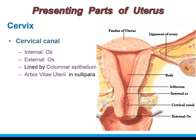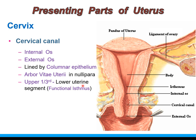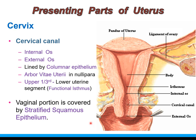During pregnancy, the upper one-third of the cervical canal is taken up by the rest of the uterine cavity to form the lower uterine segment. This upper one-third of the cervical canal is therefore called the functional isthmus. The outer surface of the vaginal portion of the cervix is lined by stratified squamous epithelium, which is the lining epithelium of the vaginal canal, meaning around the external os the epithelial lining differs.